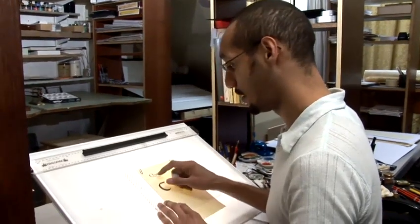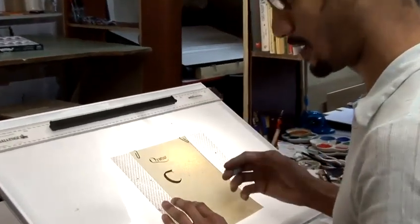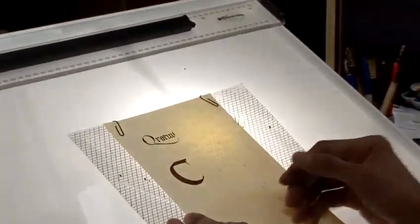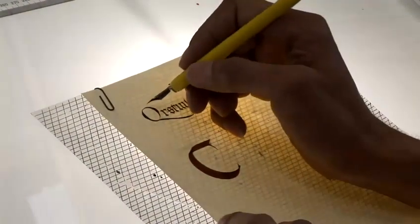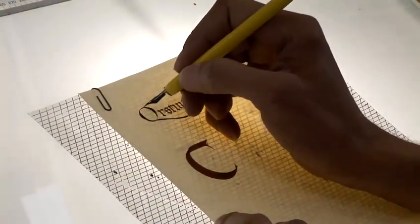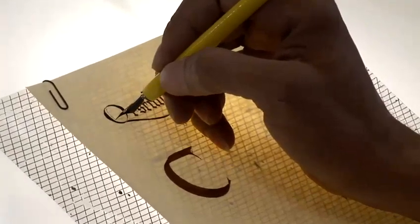So what I've done here is I've done a letter Q using a type of letter form called a Lombardic letter, and I'm going to outline and inline the letter and once that's done I'm then going to start playing with the letter itself.